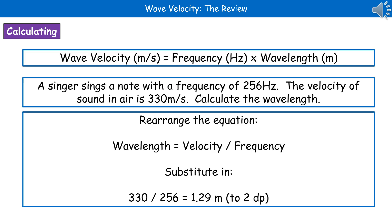Let's have a look at an example of a question that you could be asked. A singer sings a note with a frequency of 256 hertz, the velocity of sound in air is 330 meters per second. Calculate the wavelength.